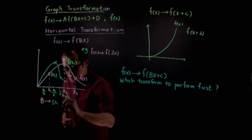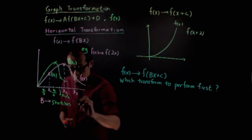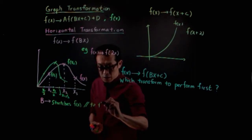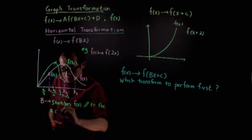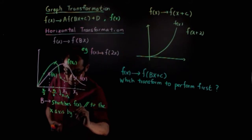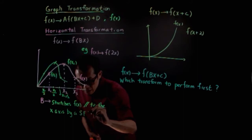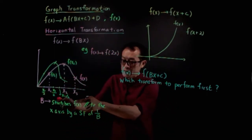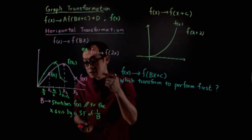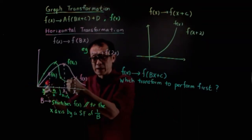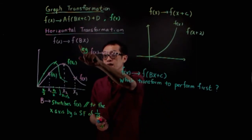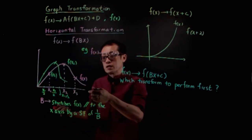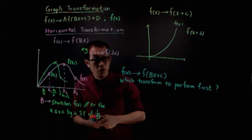So 'b' stretches f(x) parallel to the x-axis by a scale factor of 1/b. When b is greater than 1, the graph is actually compressed. If b is less than 1 but greater than 0 — say one quarter — then the graph is stretched by a scale factor of 4.